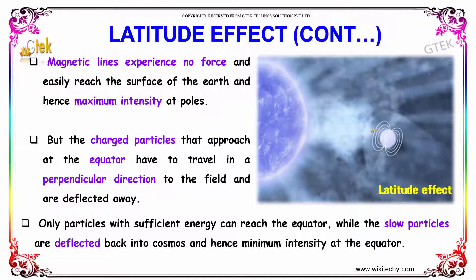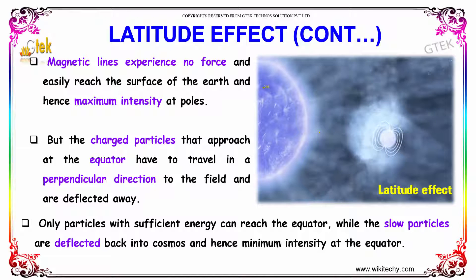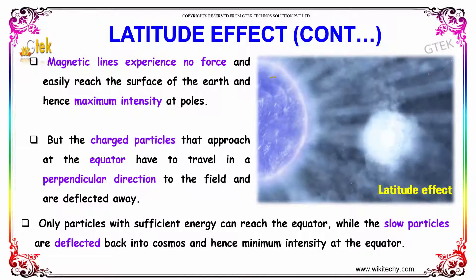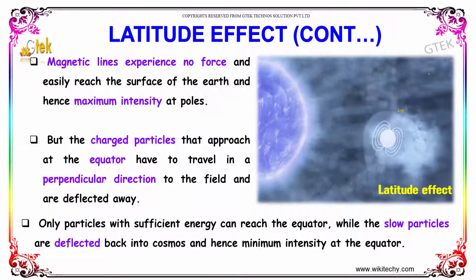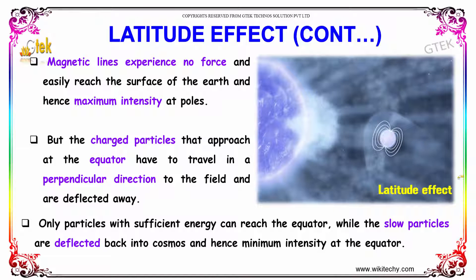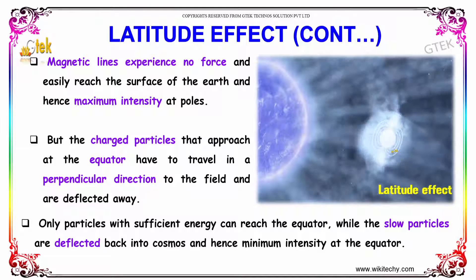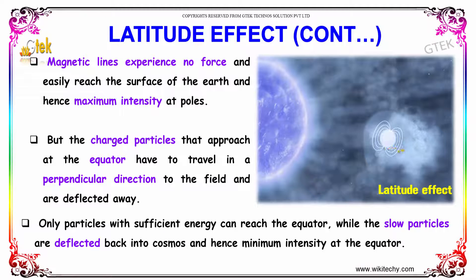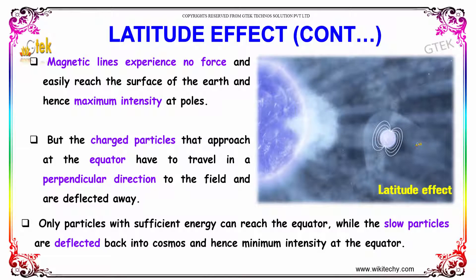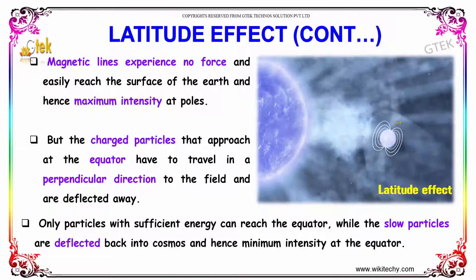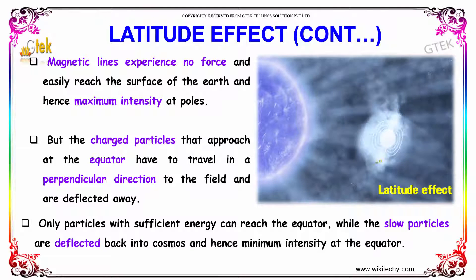But the charged particles that approach the equator have to travel in a perpendicular direction to the field and are deflected away. Only particles with sufficient energy can reach the equator while the slow particles are deflected back into the cosmos, and hence minimum intensity is at the equator.